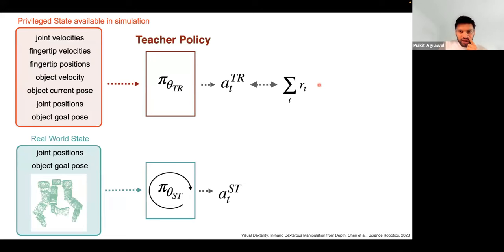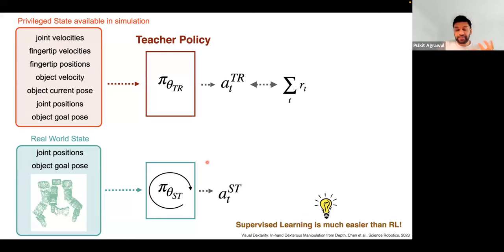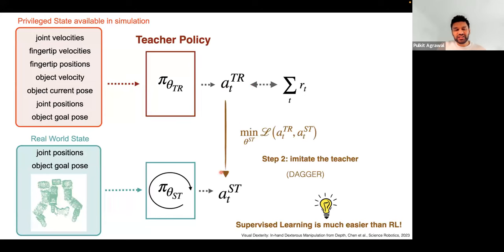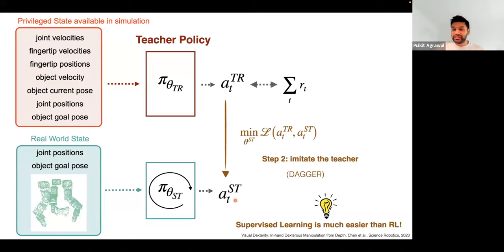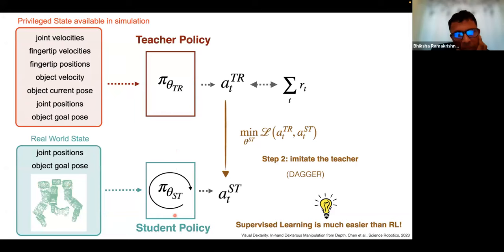Given the teacher policy, training the student policy becomes much easier because now we can perform supervised learning. In simulation I can compute both the privileged state space and the raw observation space simultaneously, then ask the teacher policy for an action and use that as supervision. This student policy only needs to learn the mapping from observations to actions — it doesn't need to figure out what the right actions are, so it doesn't need to explore. We call this the student policy.